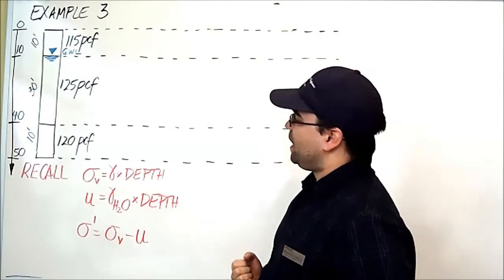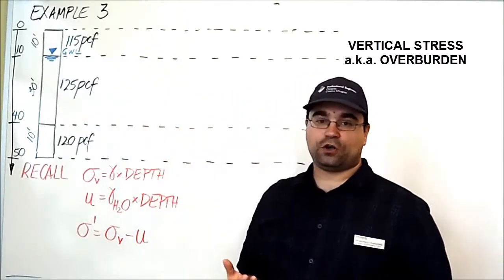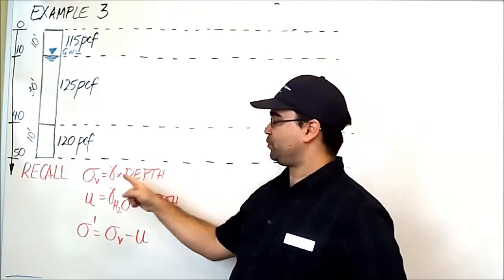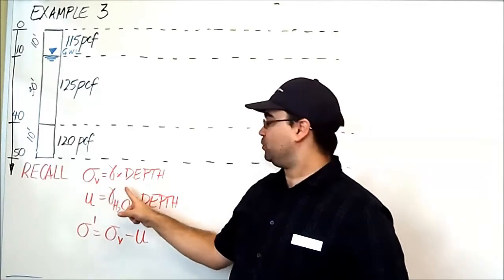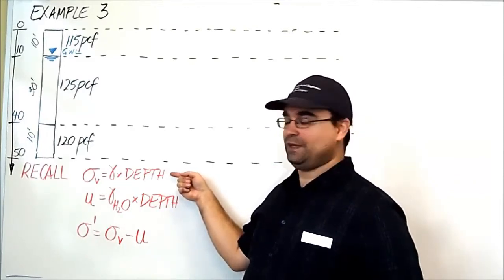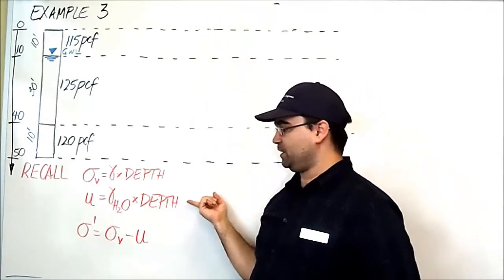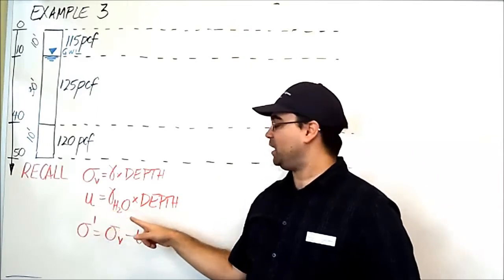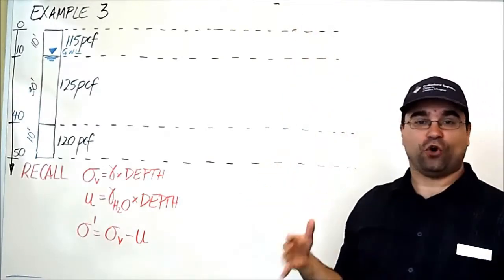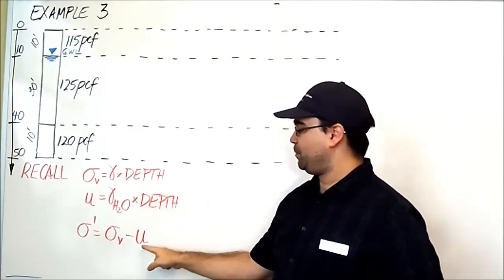Let's recall some of the formulas. We are going to start by calculating the vertical stress — that is the stress caused by the soil only, not considering water. The vertical stress is the density of the soil times the depth of that soil. Next, we're going to calculate the pore water pressure, which is the buoyancy of water: density of water times the depth of water above. Finally, we're going to calculate the effective stress, which is the difference between the vertical stress and the pore water pressure.